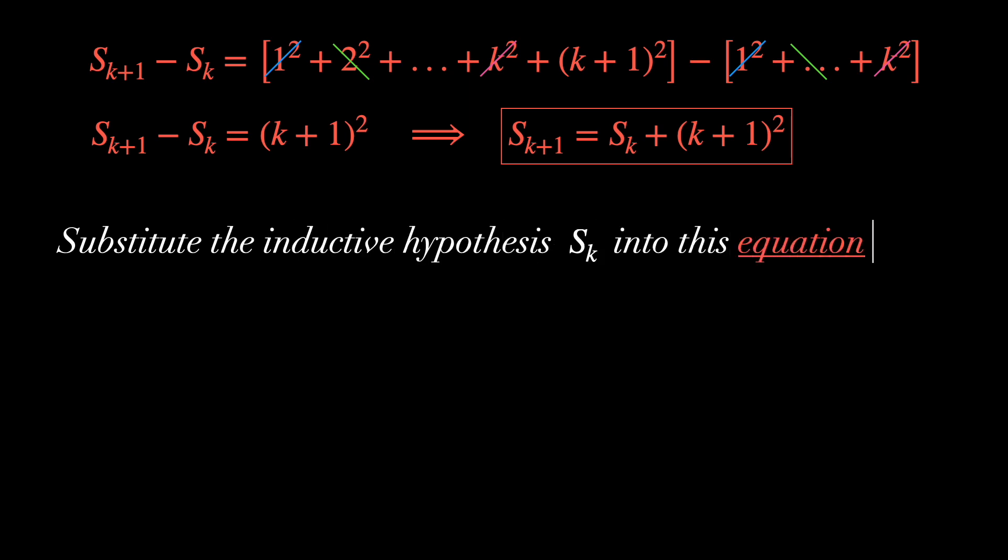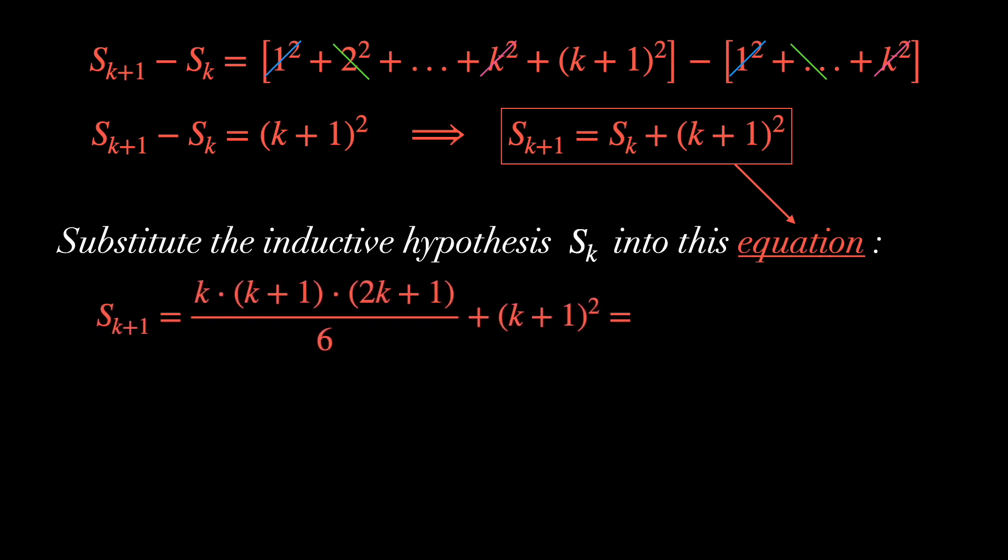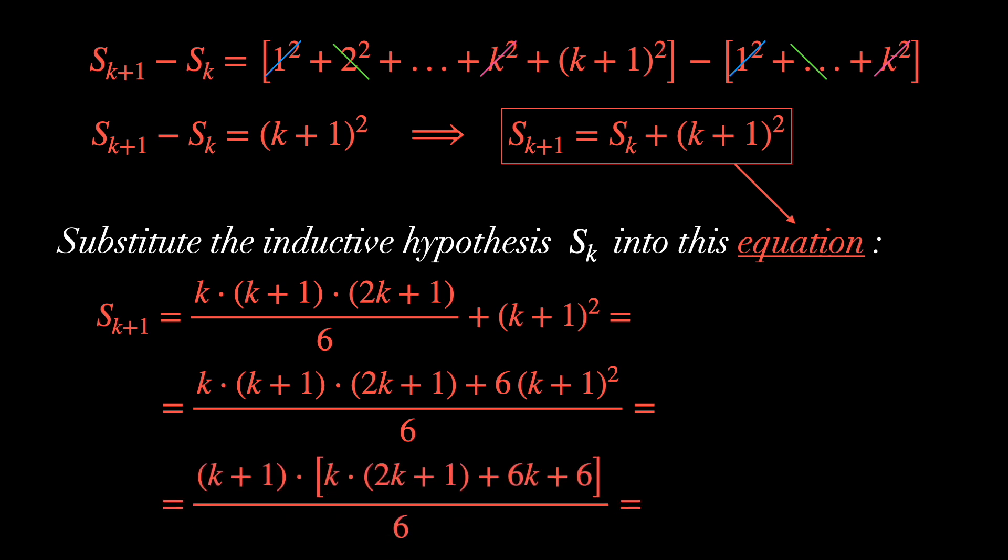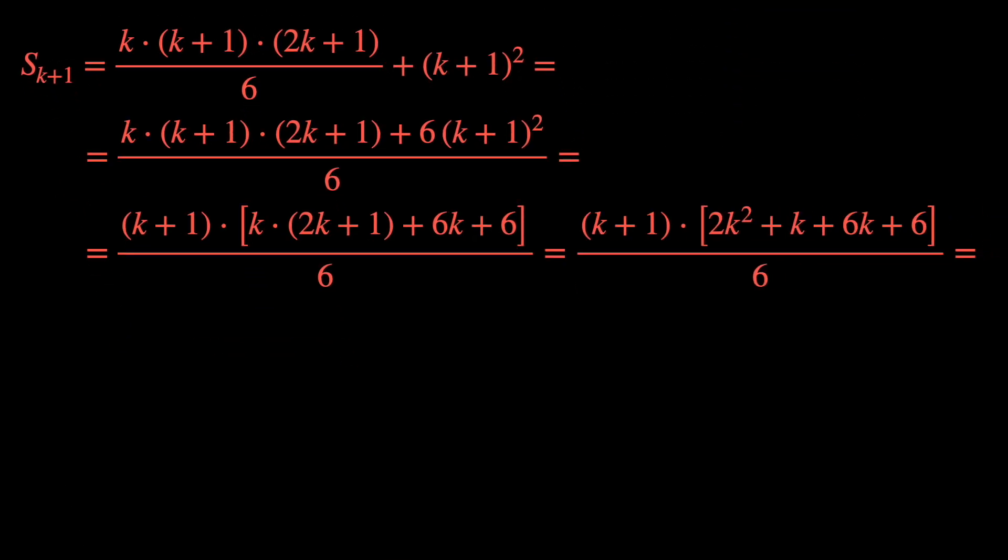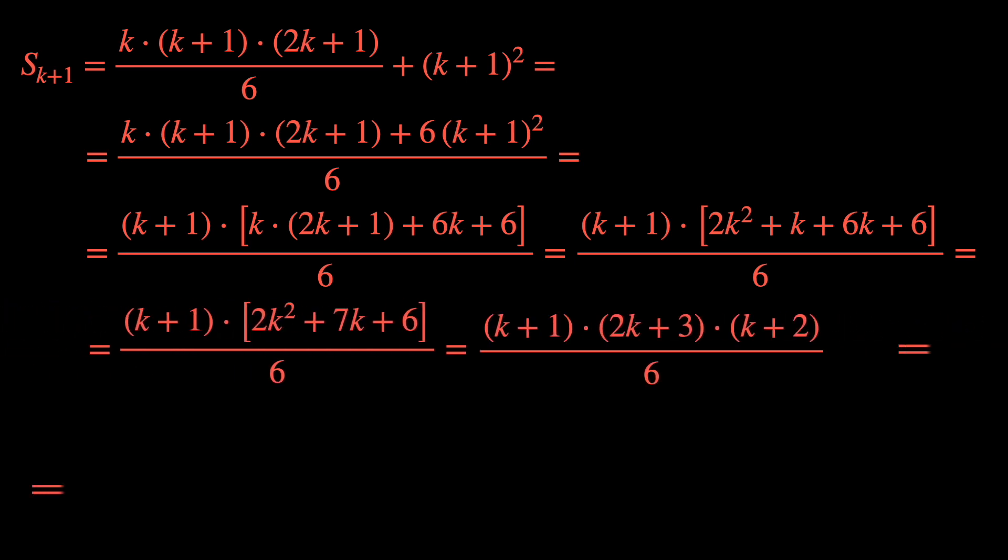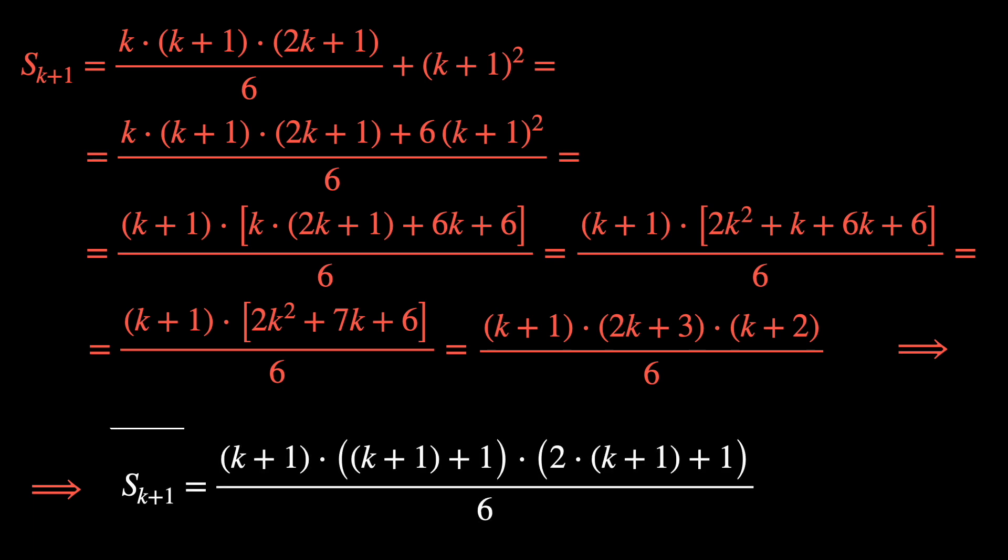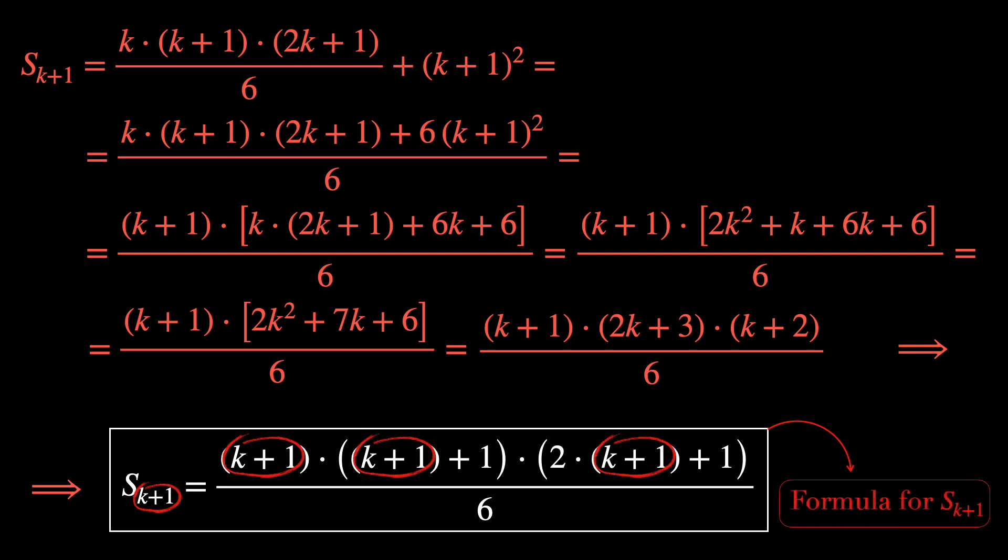Let's substitute the inductive hypothesis for n equals k into this expression that we just found. Working on the math here, we find out that the sum for n equals k+1 is (k+1)((k+1)+1)(2(k+1)+1)/6, which is precisely the formula we were looking for.